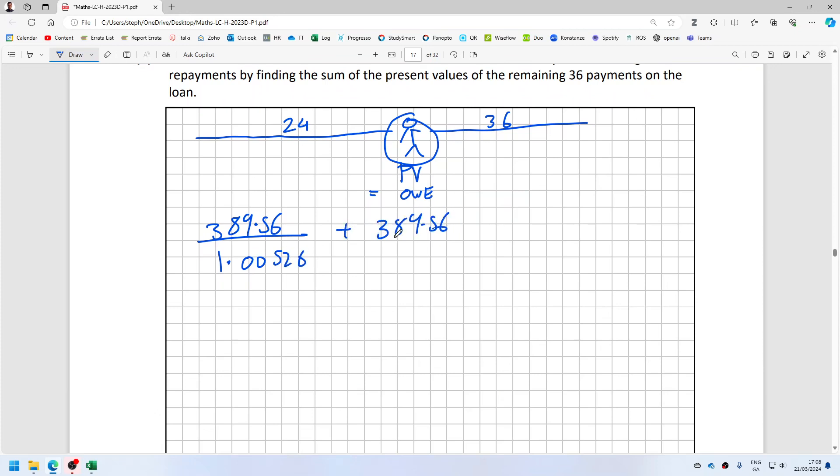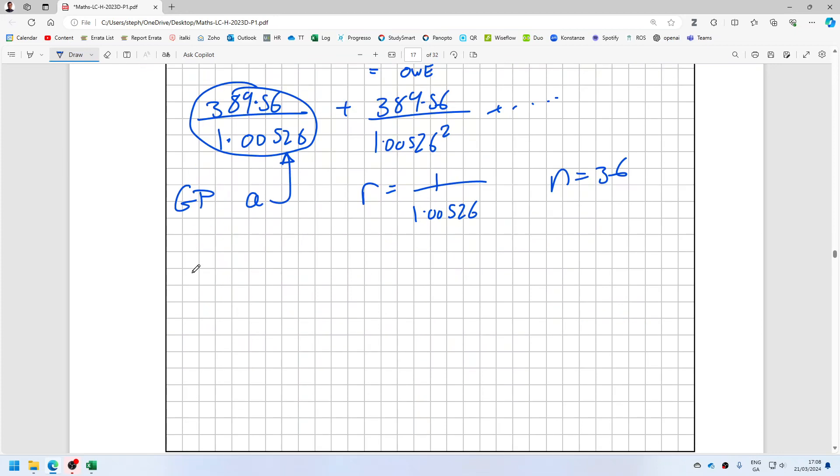This is actually a geometric progression where a is the first term, which is that fraction, and r is 1 over 1.00526, and n is 36. So using the formula a times 1 minus r to the power n over 1 minus r, let's see what I get.